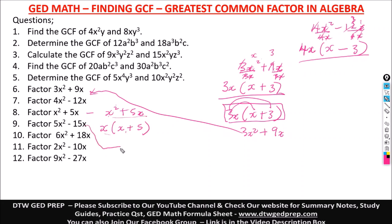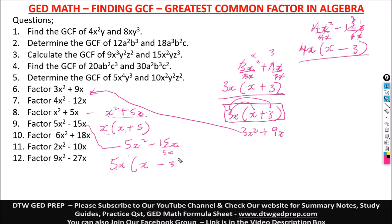For 5x − 15x: the greatest common factor for the numbers is 5, and for the variables it's x. We bring out 5x. Dividing gives x minus 3. The factored form is 5x(x − 3).